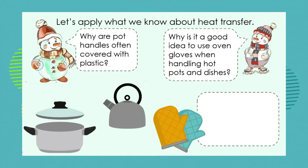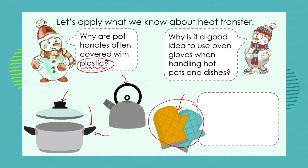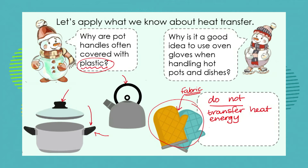Why are pot handles and the lids and handles of kettles often covered with plastic? And why is it a good idea to use oven gloves or oven mitts when you are handling pots that are hot and dishes that are coming out of an oven? Well, of course the plastic and the fabric that makes up the oven gloves are materials that do not transfer heat energy efficiently.